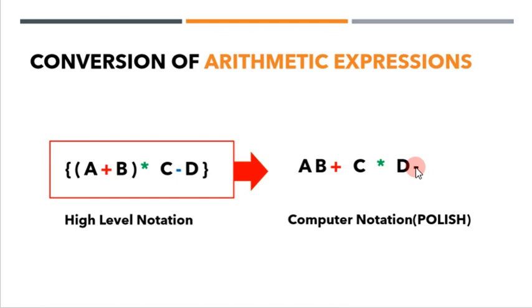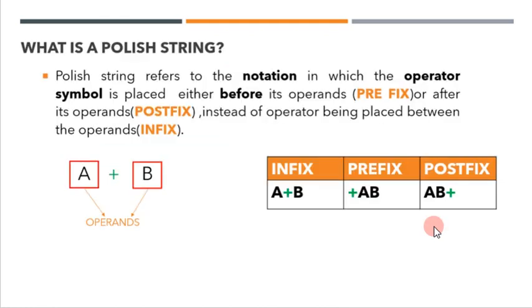This simpler notation which you are seeing here is actually the polish string. To define a polish string, I must say it refers to a kind of notation in which either the operator symbol is placed before its operands or it might be kept after its operands.